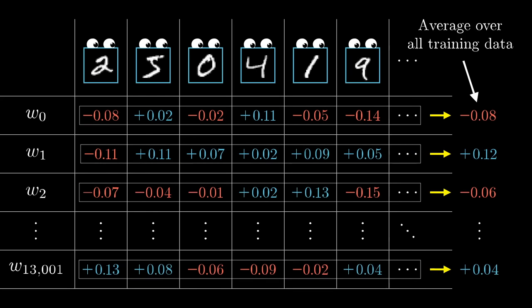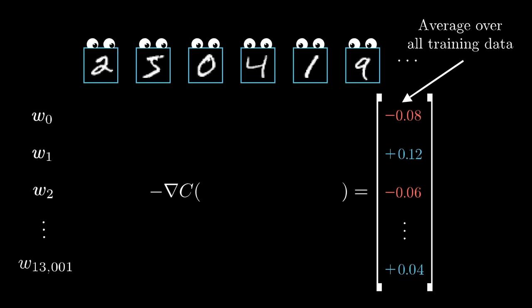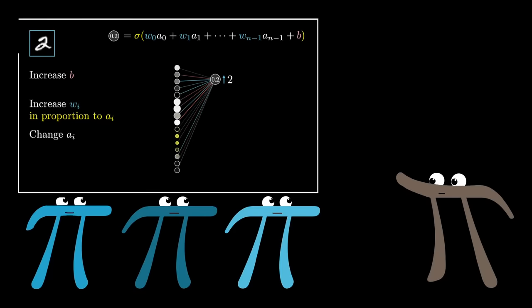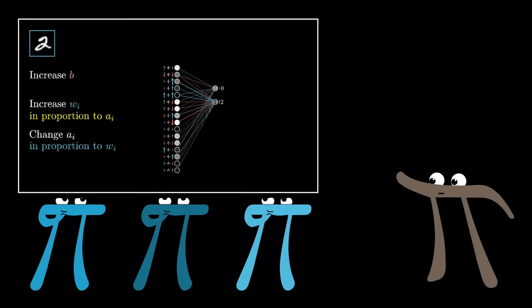This collection here of the averaged nudges to each weight and bias is, loosely speaking, the negative gradient of the cost function referenced in the last video, or at least something proportional to it. I say loosely speaking only because I have yet to get quantitatively precise about those nudges, but if you understood every change that I just referenced, why some are proportionally bigger than others, and how they all need to be added together, you understand the mechanics for what backpropagation is actually doing.